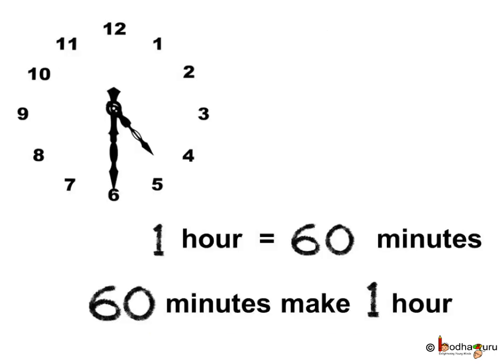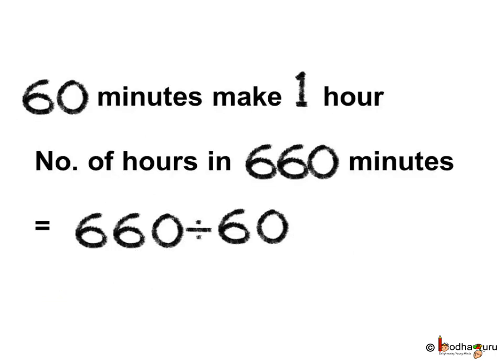Now you understand hours and minutes. We already know 1 hour is equal to 60 minutes, or the other way, we can say 60 minutes make 1 hour. Let us see what we need to find. We need to find how many hours are there in 660 minutes.